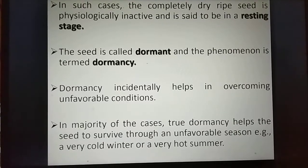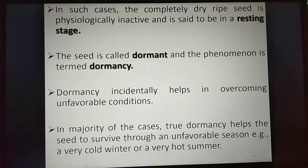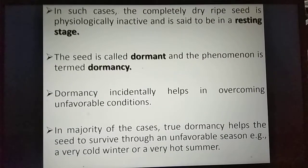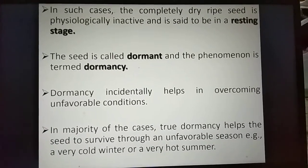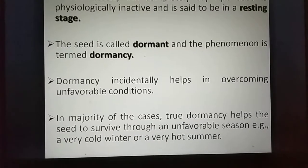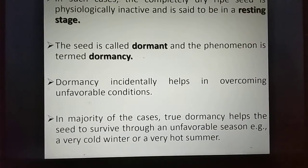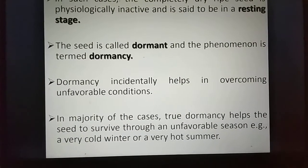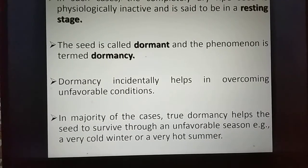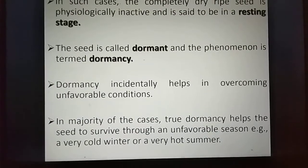In such cases the completely dry ripe seed is physiologically inactive and is said to be in the resting stage. The seed is called dormant and the phenomenon is called dormancy. Dormancy helps in overcoming unfavorable conditions. In the majority of cases, true dormancy helps the seed to survive through an unfavorable season, such as a very cold winter or a very hot summer.